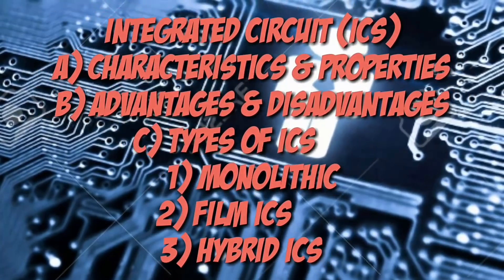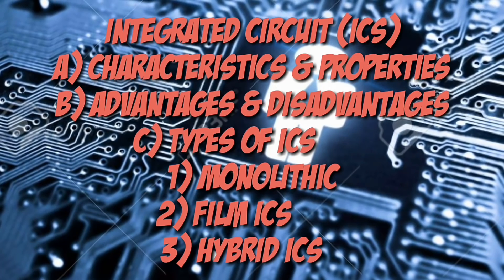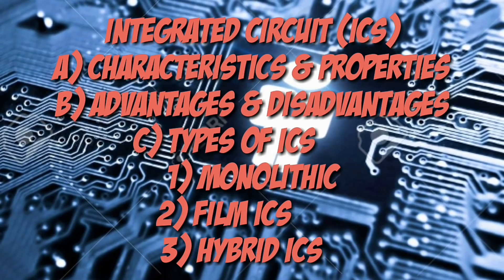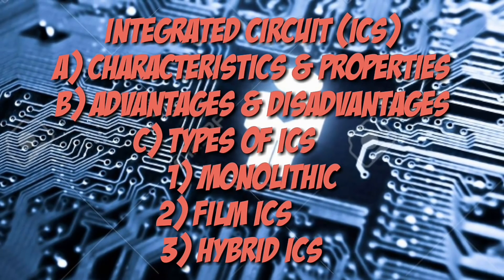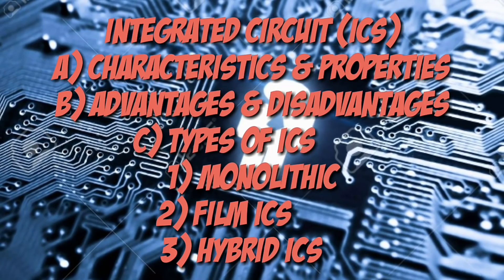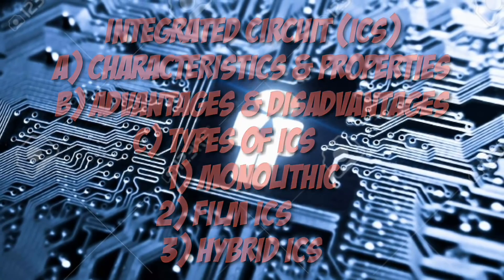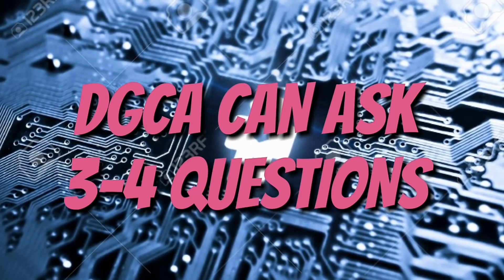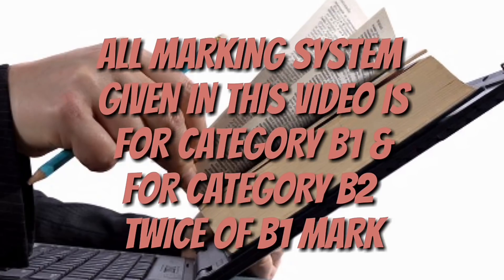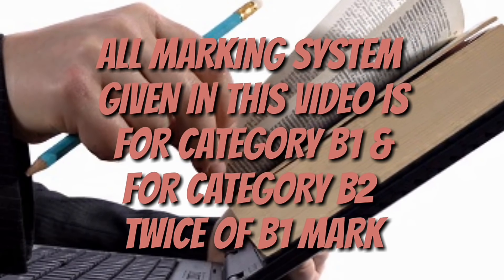Next, we have integrated circuits, which is a very interesting topic in Module 4. This includes characteristics and properties of ICs, advantages and disadvantages of ICs, and different types of ICs which include monolithic, film, and hybrid — with monolithic ICs being the most important. We also have applications of ICs including modern electronics, computers, and digital cameras. DGC can ask 3 to 4 questions from this topic. For B2, increase the number of questions to twice that of B1.